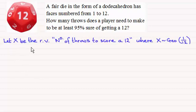we can let X be the random variable number of throws to score a 12, where X is distributed geometrically with parameter p equaling 1/12. That's the probability of scoring a 12.